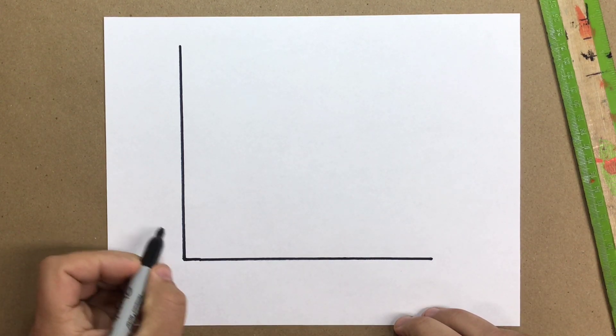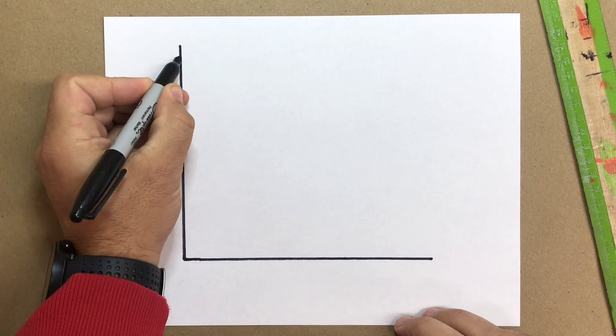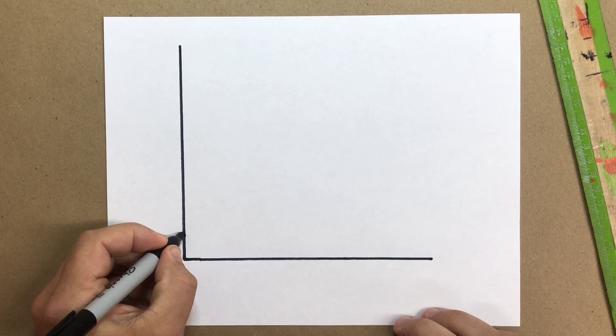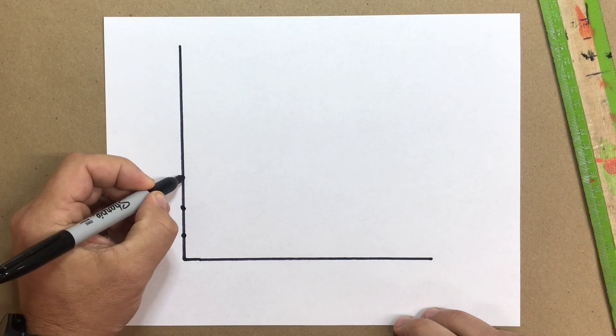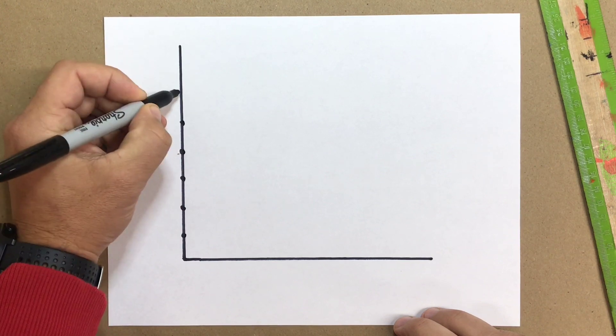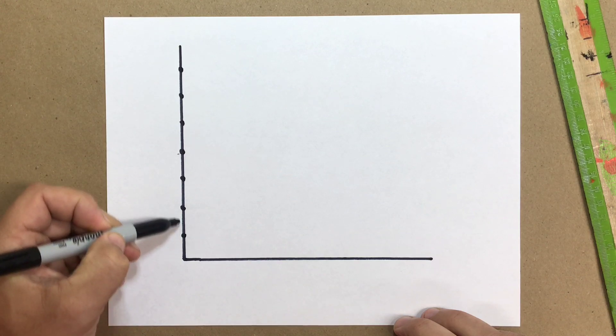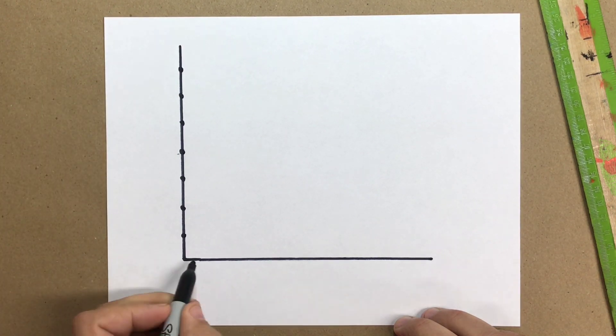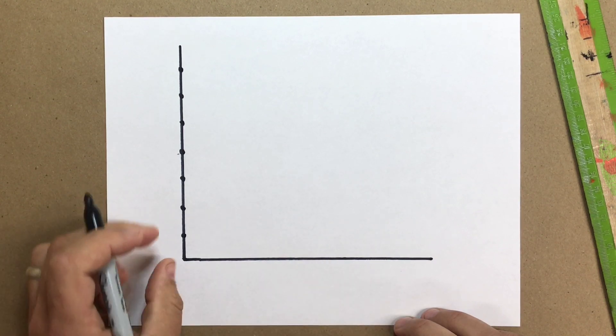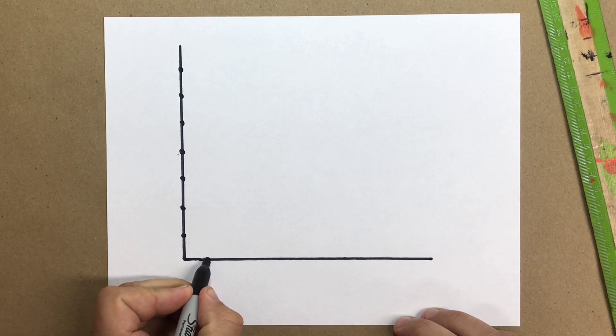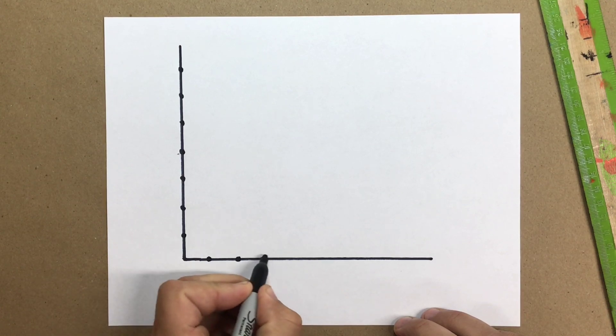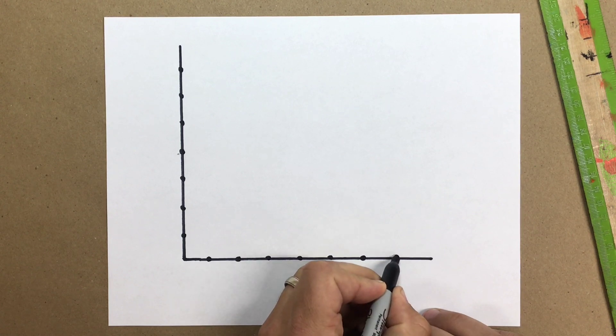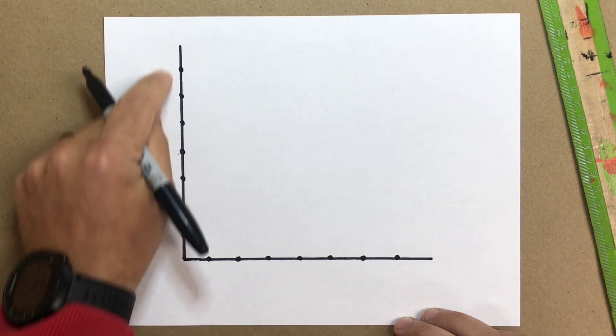Now the next thing I need to do is create evenly spaced dots along this line going up and along this line going sideways. You can measure that if you'd like. Today I'm actually just going to guess. So I'm going to skip a little bit of space and put that dot, skip a little space, put that dot. So they're pretty evenly spaced out. Now I'm going to count these: 1, 2, 3, 4, 5, 6, 7 dots. I need to put an equal amount on this side, so I need 7 dots going this way evenly spaced as well. 1, 2, 3, 4, 5, 6, and 7. So I have 7 dots across the bottom, 7 dots going across the top.